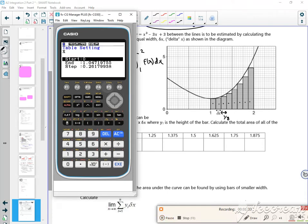So my a value is 1, because that's where I'm starting. My b value is 2, because that's where I'm ending. That's the limits of my integral. And the step, the h value is 1 over 8. There.